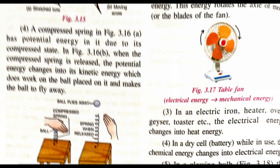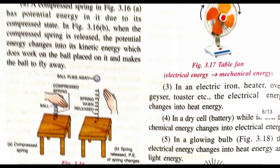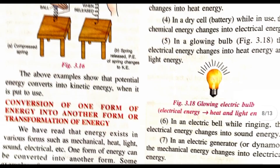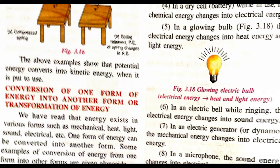If we compress the spring and push it, it will be in potential energy. When we release it, the potential energy changes into kinetic energy, which moves the spring and causes it to fly in the air. The ball attached to it will start moving. Thus all the above examples show potential energy converting into kinetic energy.